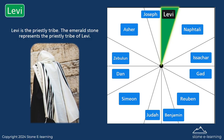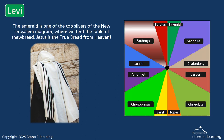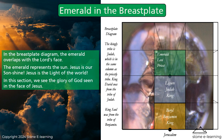Levi is the priestly tribe. The emerald stone represents the priestly tribe of Levi. The emerald is one of the top slivers of the New Jerusalem diagram, where we find the table of showbread. Jesus is the true bread from heaven. In the breastplate diagram, the emerald overlaps with the Lord's face. The emerald represents the sun — Jesus is our sunshine, the light of the world. In this section, we see the glory of God seen in the face of Jesus.